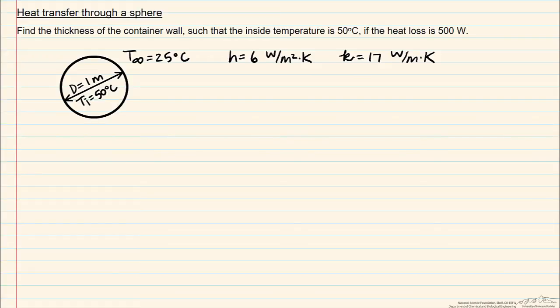And what we want to do is find the thickness of this wall such that the inside temperature, so our T inside, is equal to 50 degrees C if the heat loss is equal to 500 watts.